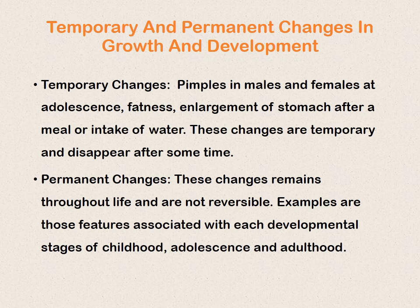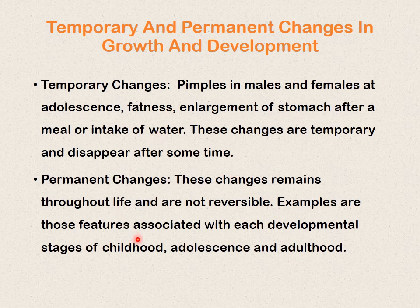Temporary changes include pimples in males and females at adolescence and enlargement of the stomach after a meal or intake of water. These changes are reversible and will disappear after some time. Permanent changes are those that remain throughout life and are non-reversible. Examples include features associated with each developmental stage — childhood, adolescence, and adulthood — such as menstruation and production of spermatozoa during puberty.